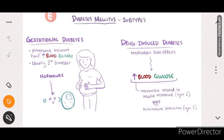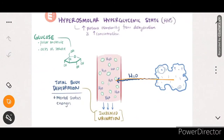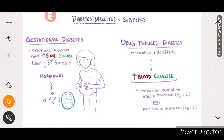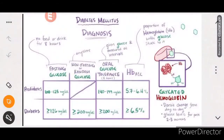In hyperosmolar hyperglycemic state (HHS), mild ketonemia and acidosis are also seen. There are also subtypes of diabetes mellitus: gestational diabetes, which occurs in pregnant women with high blood glucose usually in the third trimester due to hormone secretion; and drug-induced diabetes, which occurs due to side effects of medications leading to increased blood glucose levels.